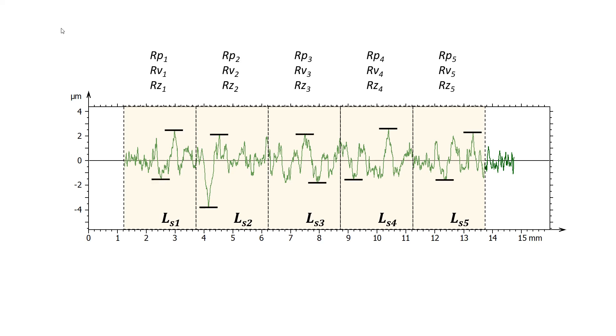Each parameter is calculated on five sampling lengths which leads to five estimator values. The final parameter value is calculated as the average of the estimator values.